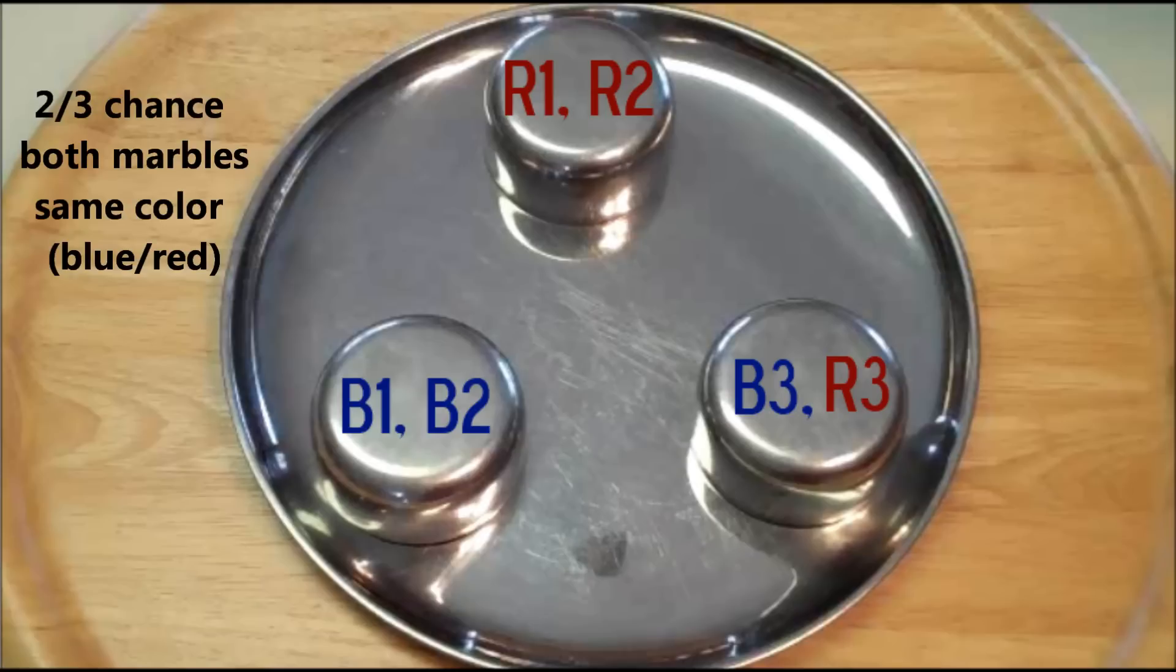If I select one of these bowls at random, there's a two-thirds chance that both marbles will be the same color, either blue or red. So that's one way to see the answer is two-thirds: under two-thirds of the bowls, both marbles have the same color.